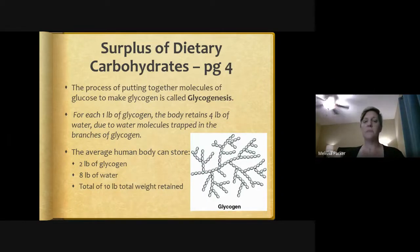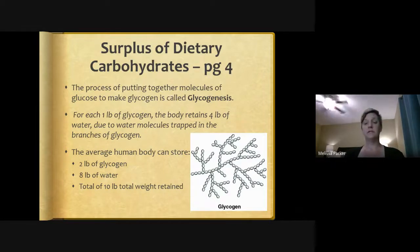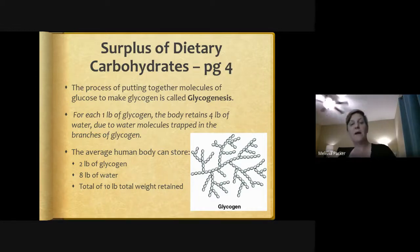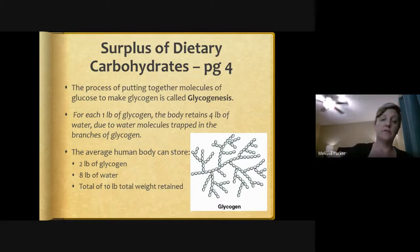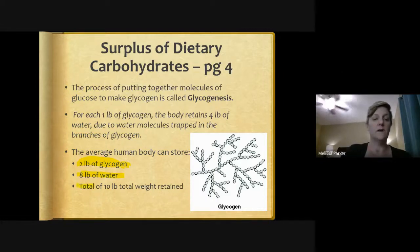The process of putting together glucose molecules to make glycogen is called glycogenesis — 'genesis' means creation, 'glyco' referring to glycogen. For each pound of glycogen, the body retains four pounds of water due to water molecules being trapped in the branches of the glycogen. The average human body can store about two pounds of glycogen, meaning with that two pounds we also have eight pounds of water — a total of 10 pounds retained.